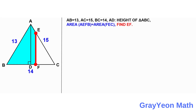Welcome to Grayon Math. We are asked to solve this problem. Given dimensions are AB is equal to 13, AC is equal to 15, BC is equal to 14, AD is the height of triangle ABC, and the area of AEFB is equal to the area of AFEC. Find EF.